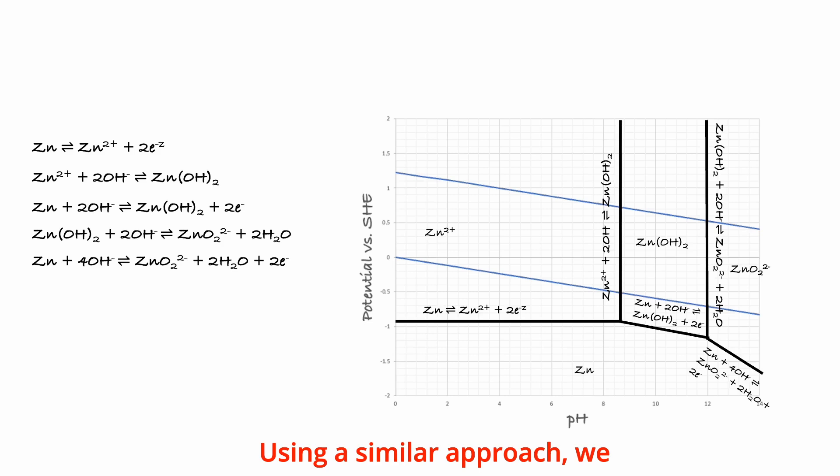Using a similar approach, we can also construct the Pourbaix diagram for metals such as zinc. By writing down all chemical and electrochemical equilibria involving zinc, we generate the various lines on a pH potential diagram, and the lines separate different regions of stability for various zinc species.